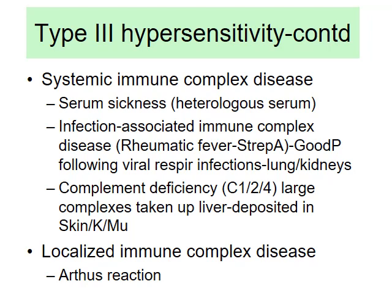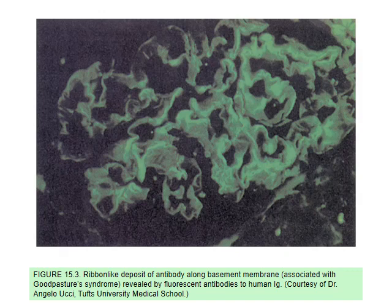Type 3 is mostly systemic, but it could also be a localized immune complex disease. A typical example is the Arthus reaction. When immunology lab tests are discussed, you need to know the principles of ELISA, flow cytometry, radioimmunoassay, gel electrophoresis, and immunofluorescence.